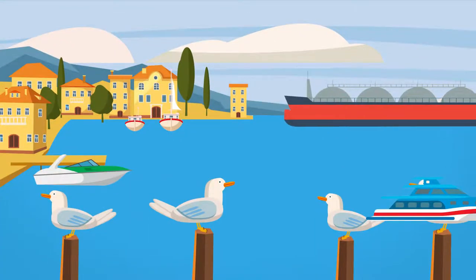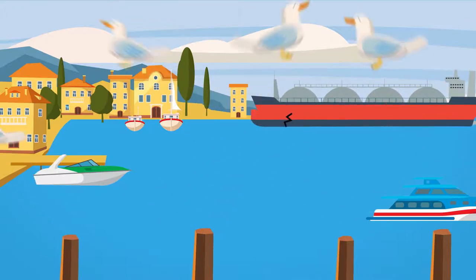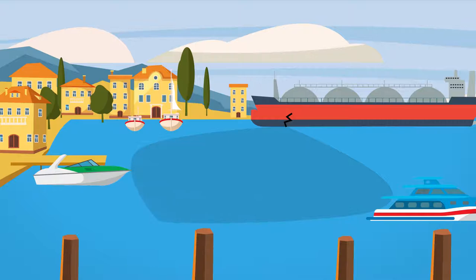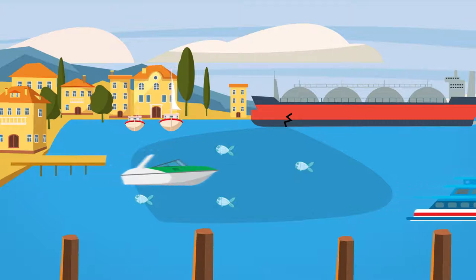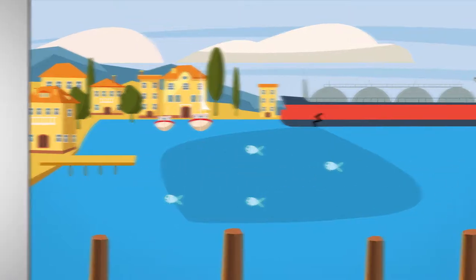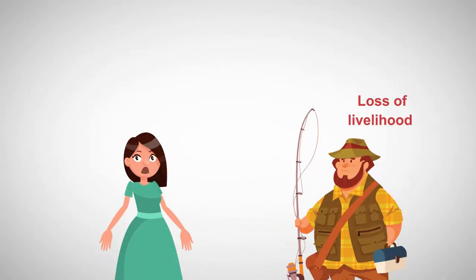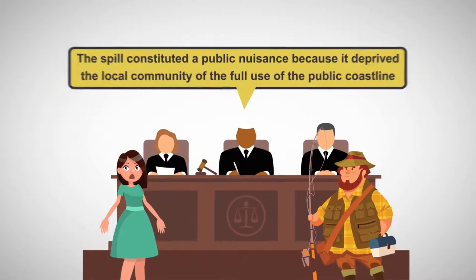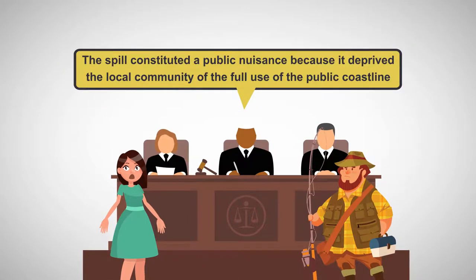For example, in the 1970s, an oil tanker ran aground on the coast of Maine, releasing 100,000 gallons of oil into the water. The result was an environmental disaster, devastating local marine life and severely impacting a town's tourism industry. Local fishermen sued for loss of livelihood, and hotel and restaurant owners sued for loss of business from visitors to the area. The court ruled that the spill constituted a public nuisance because it deprived the local community of the full use of the public coastline.